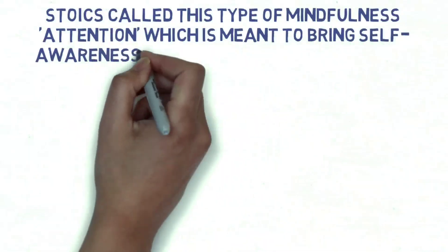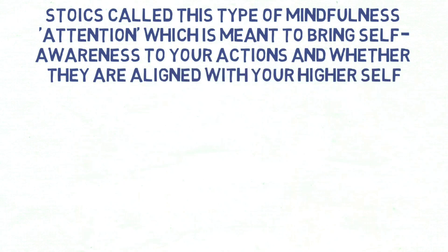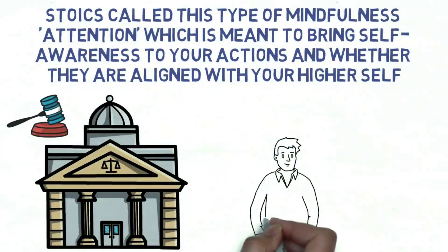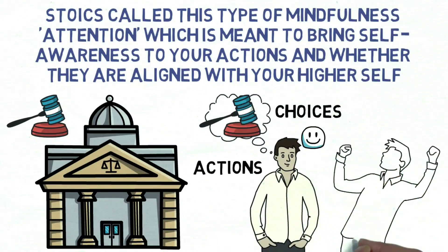Stoics called this type of mindfulness, attention, which is meant to bring self-awareness to your actions and whether they are aligned with your higher self. Some Stoics compared this type of daily self-reflection to pleading your case to a court. You recall and judge your day through taking the time to self-examine your daily actions and choices and then systematically review them. This is not meant to be a judgmental practice, but instead a compassionate review that will guide you into making better choices in the future.